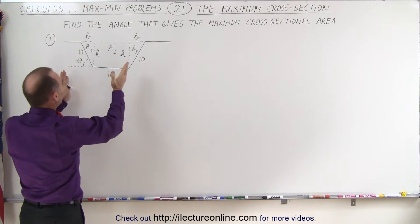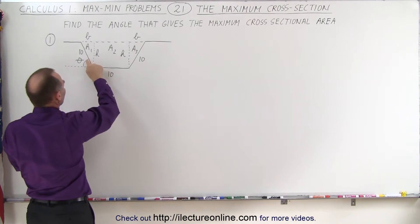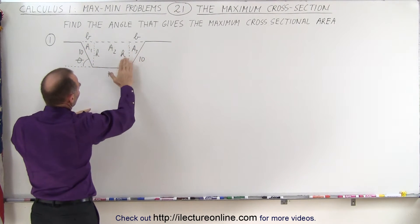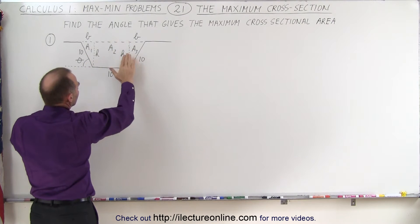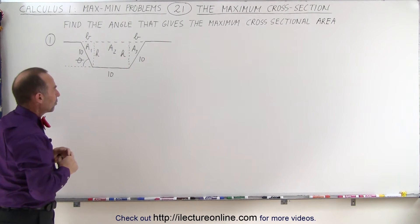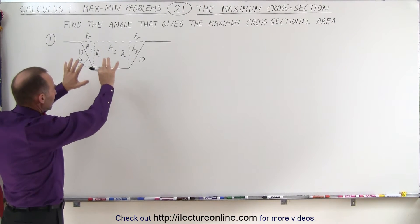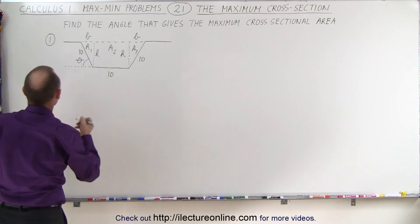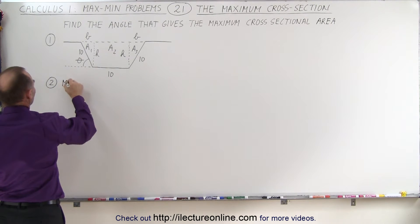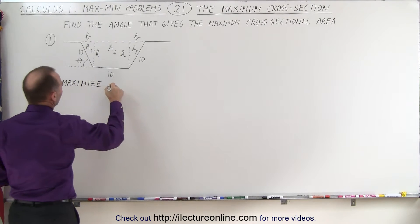The question is: what should be the angle of the sides, determined by angle theta relative to the horizontal, in such a way that the cross-sectional area is a maximum value? The first thing we're trying to do, after we draw the diagram, is determine what's being maximized. We're going to maximize the total area.